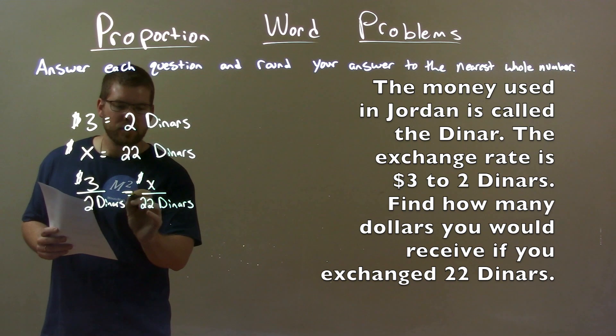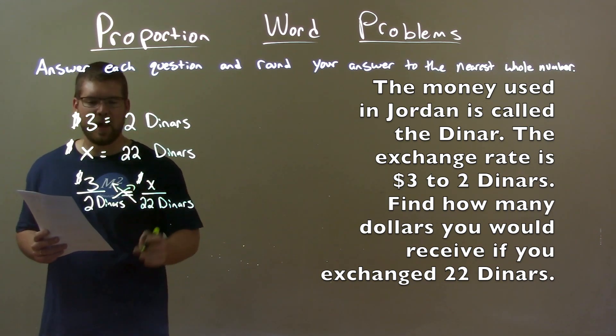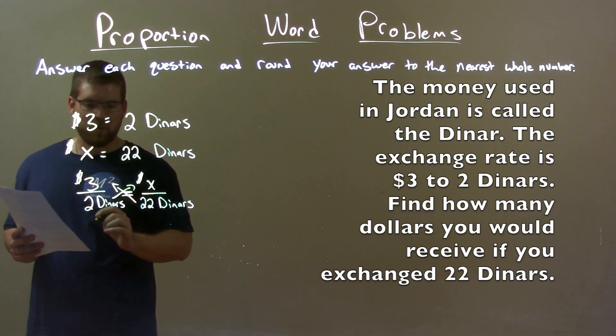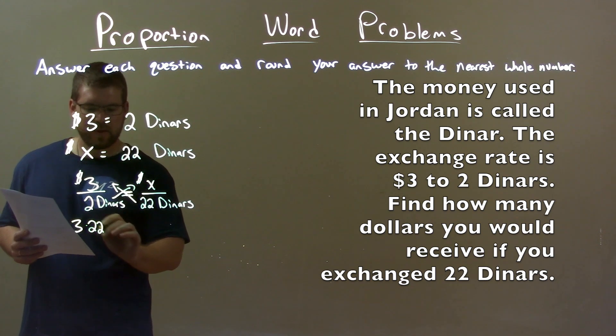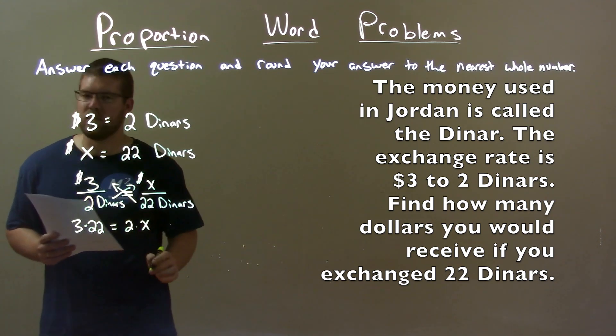So we want to cross multiply here. 22 times 3 and 2 times x. Now I am not actually going to multiply that number out. You'll see why in a second. 3 times 22 is on the left here and 2 times x is on the right.